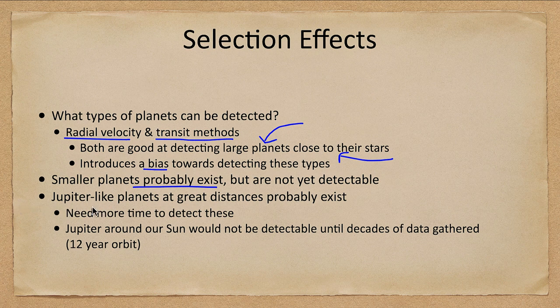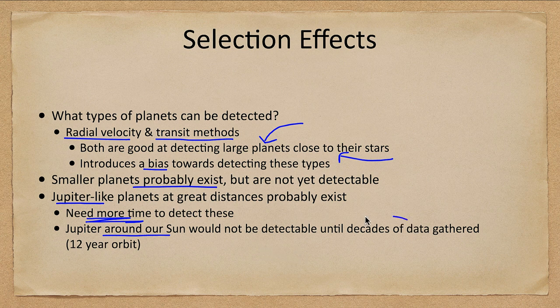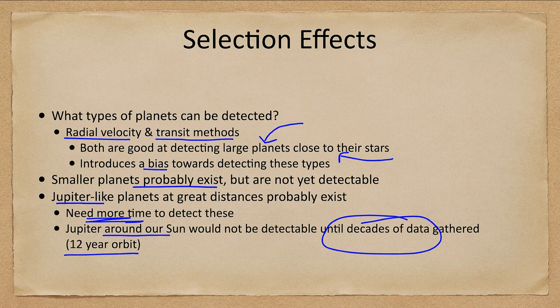Smaller planets probably exist but are not yet detectable, although as technology increases we are finding more Earth-like planets. Jupiter-like planets at great distances are hard to find — we need time. Jupiter around our Sun would not be detectable for decades: it has a 12-year orbit, so we'd see a transit today, wait 12 years for the next, then wait another 12 to confirm. Things orbiting even further out are really hard to detect by radial velocity or transit methods.